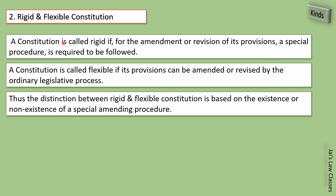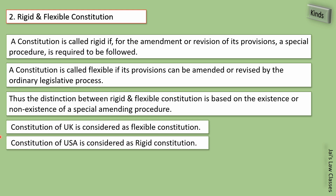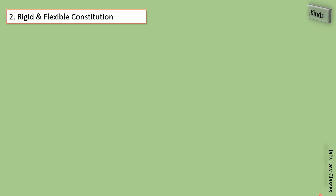The main distinction between rigid and flexible constitution is based on the existence or non-existence of a special amending procedure. The constitution of the UK is considered flexible because laws can be amended easily, while the constitution of the USA is considered rigid because a very heavy procedure is adopted to change any law. Rigid constitution is considered good as it is a stable constitution — provisions cannot be changed easily at the desire of the ruling party.